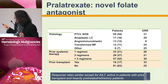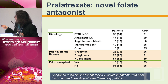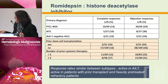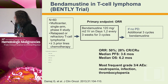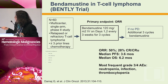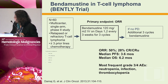Pralatrexate, the folate antagonist, had an overall response rate of 31%, and there did not appear to be many responses in angioimmunoblastic T-cell lymphoma. Romidepsin did have more responses in AITL patients, and likewise with belinostat. Bendamustine has also been shown to be active with a 50% overall response rate, but progression-free survival is not really good, so this agent is being used in combination with some of the other newer therapies.